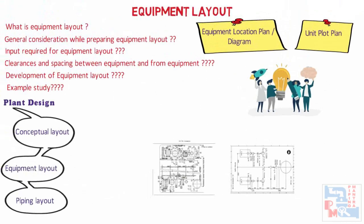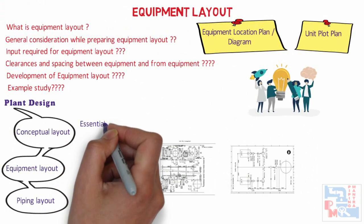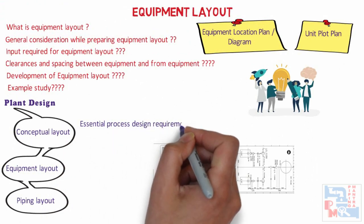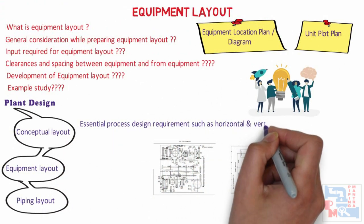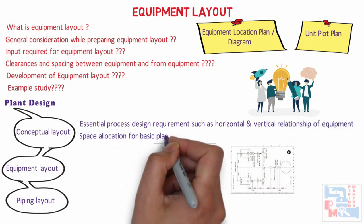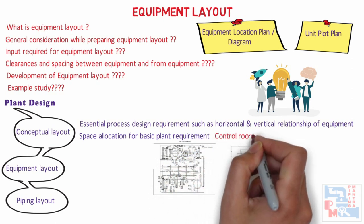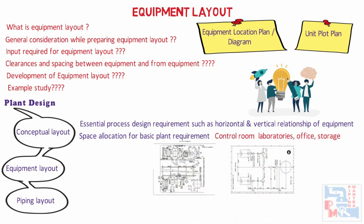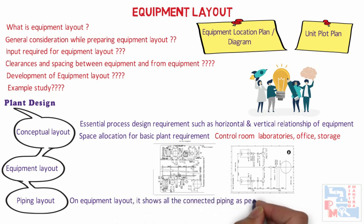What is a Conceptual Layout? It is the part of the basic engineering package which is prepared in the early stage. It consists of information like essential process design requirements such as horizontal and vertical relationships of equipment, and space allocation for basic plant requirements like control room, laboratories, office, storage, etc.